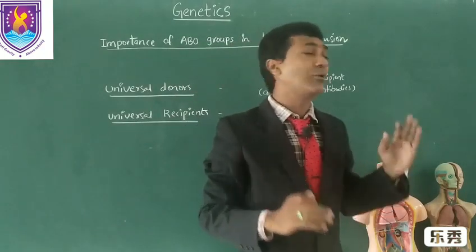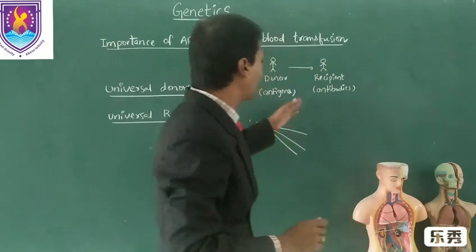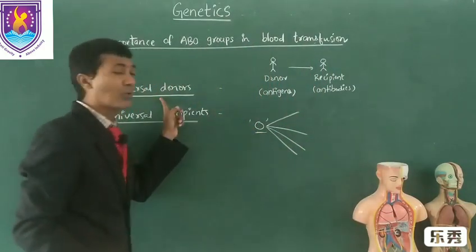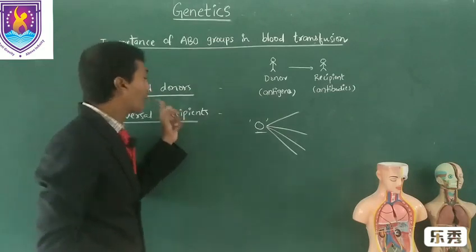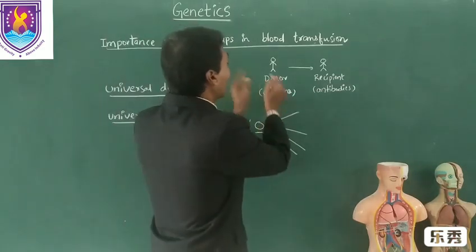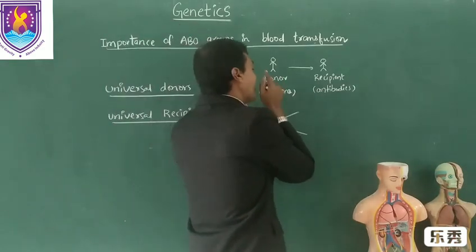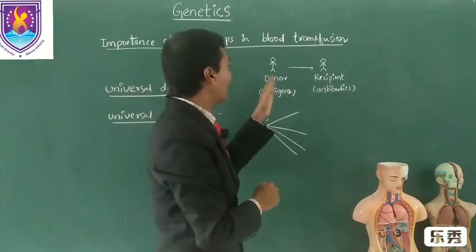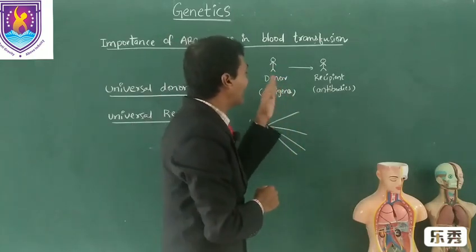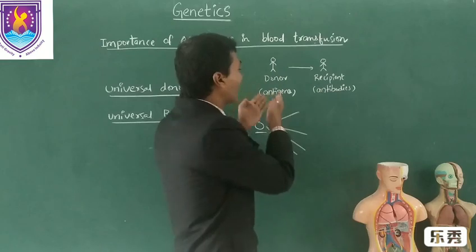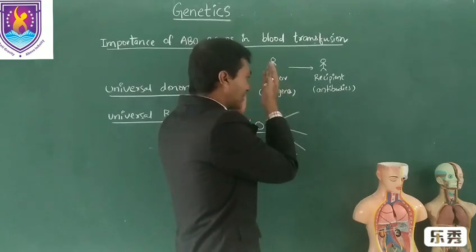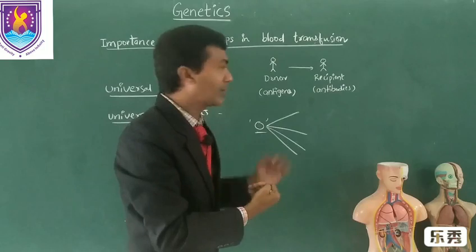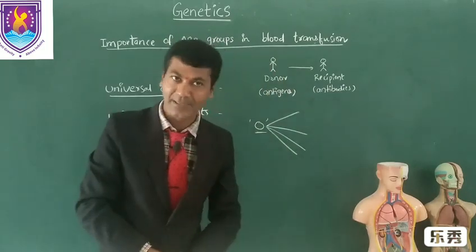Blood group O people can donate their blood to any other blood groups, hence these are called universal donors. Because they are not having antigens — and antigens are very important for the donor — there are no agglutination-causing agents from the donor, so nothing will happen in the recipient's blood.